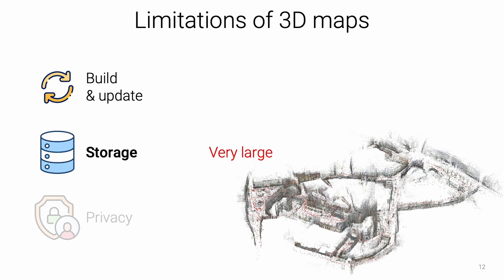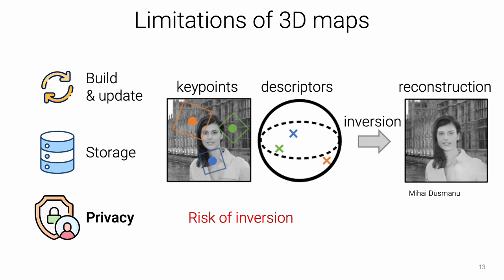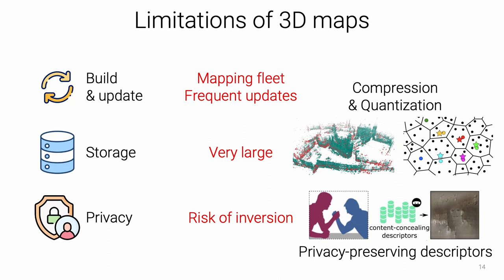Last, 3D maps pose privacy risks, because their descriptors can be inverted to reveal the appearance of sensitive content in mapping or query images. The research community has recently proposed solutions like scene compression and privacy-preserving descriptors. These, however, consistently impair the robustness and accuracy of localization algorithms.